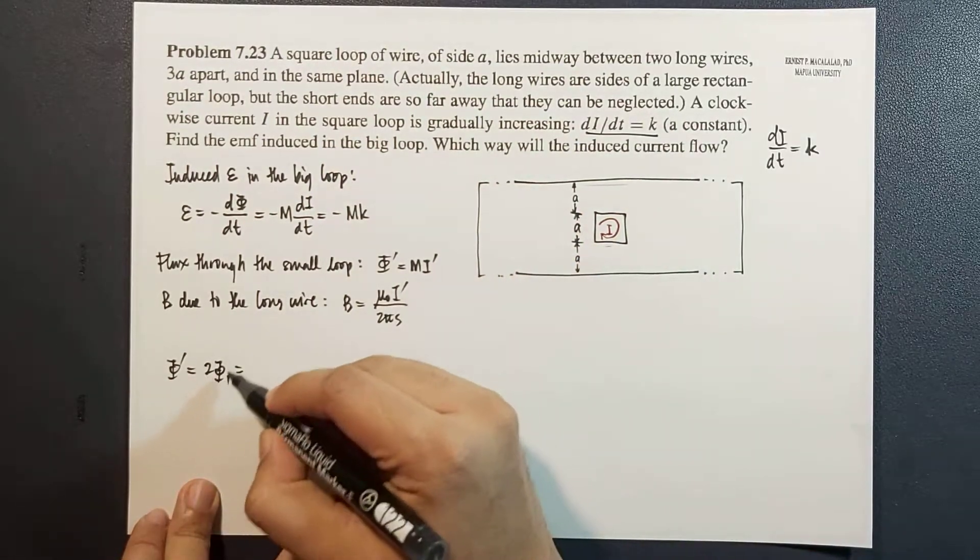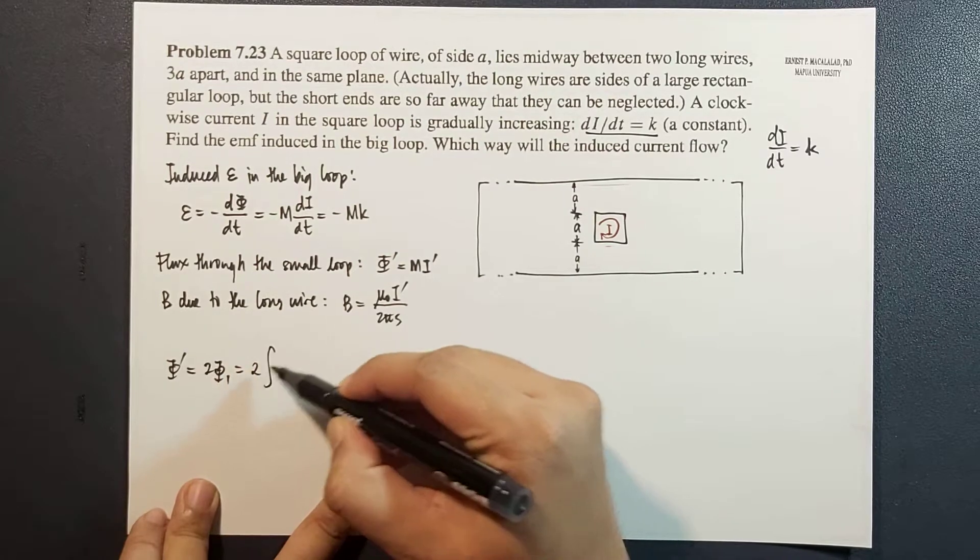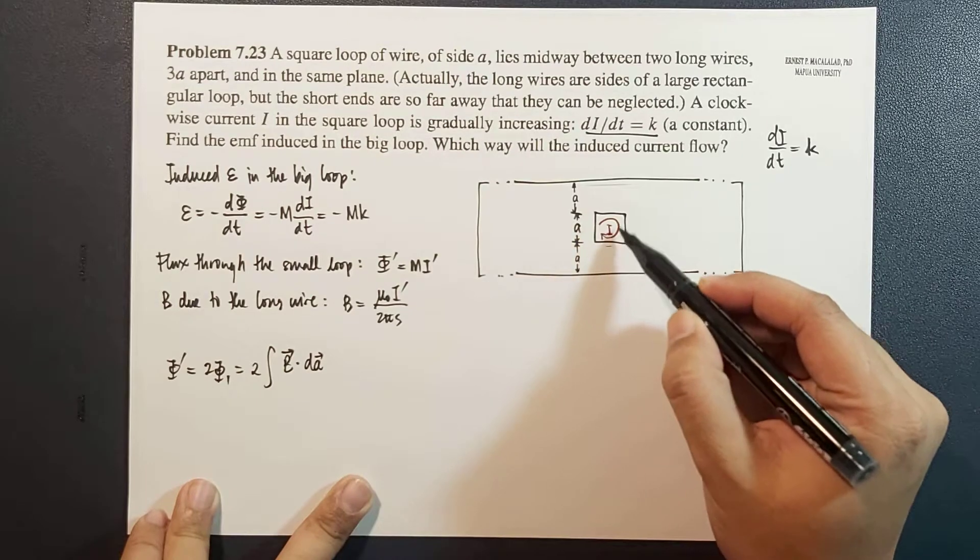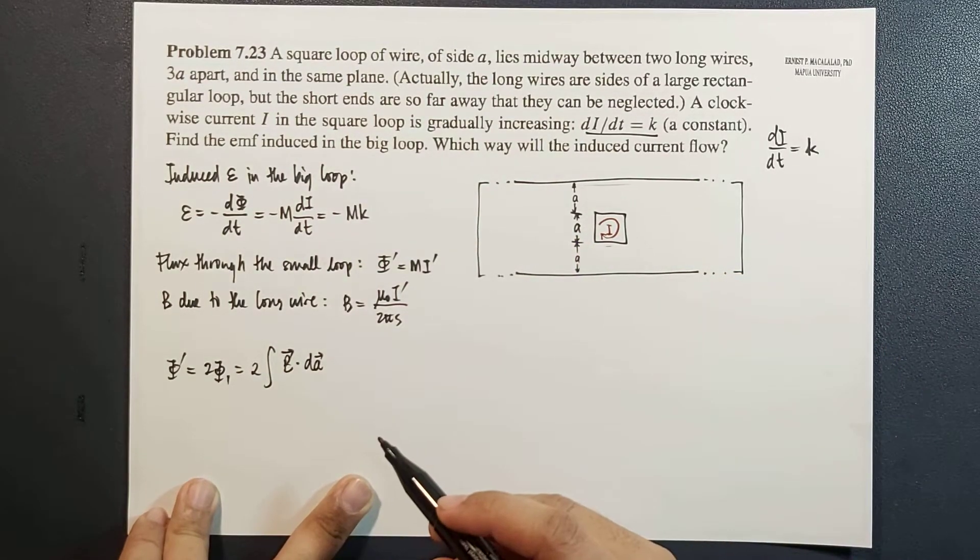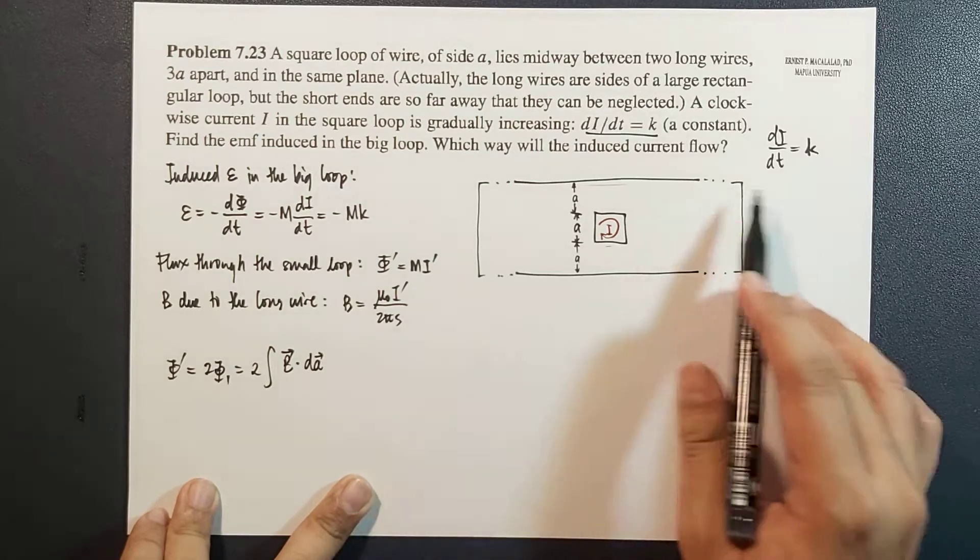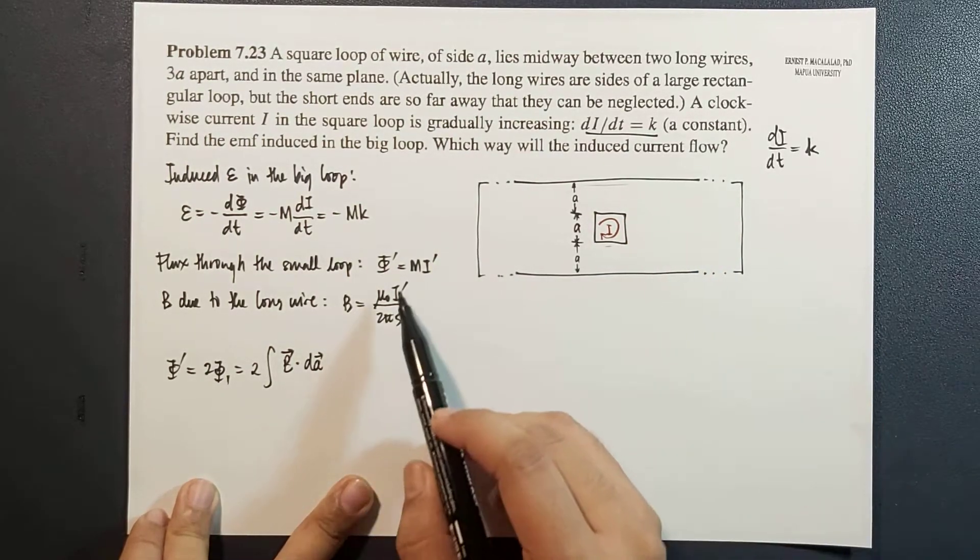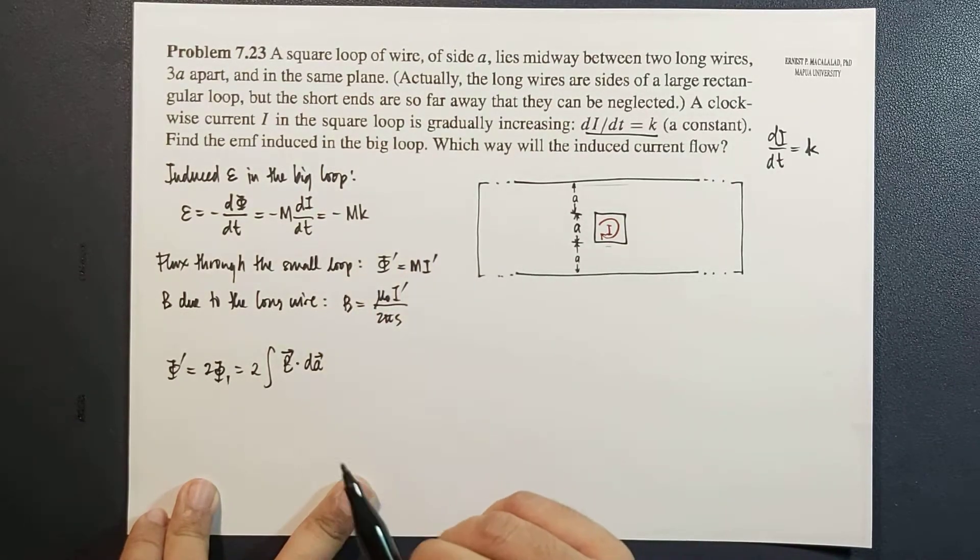So, this expression can now be written as 2 times the integral of B dot dA, where dA is the area element of your square loop. This is done by allowing the current flowing through the big loop, and the flux through the little loop is this one.